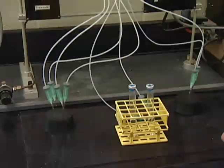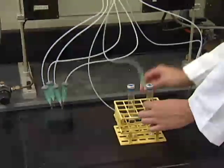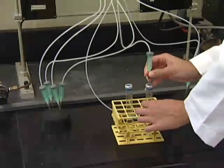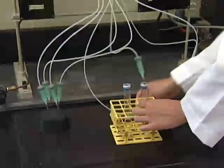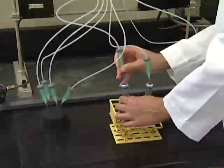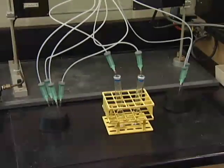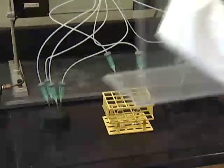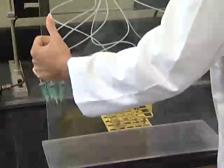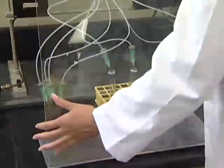Insert the gassing line needles through the stoppers of the tubes you want to change the headspace of. Use some kind of clear plastic shield to protect yourself in case a tube explodes or implodes during operation of this type of system.